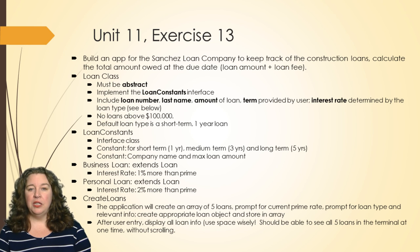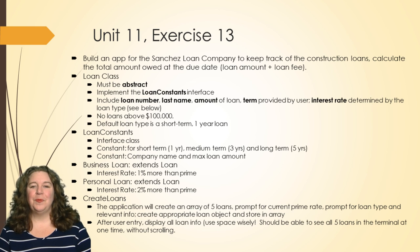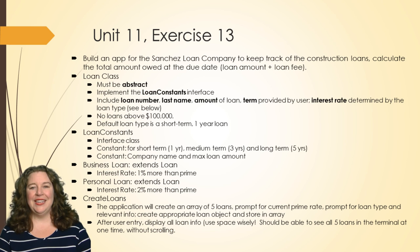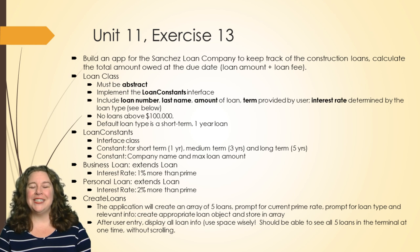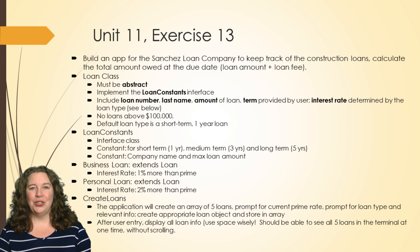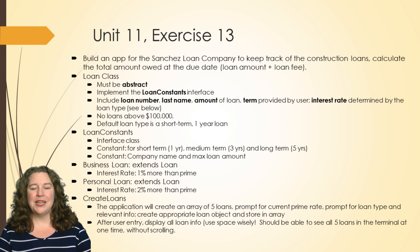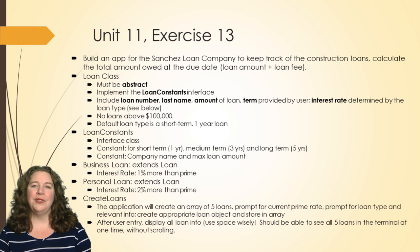Based on the information entered, you're going to determine the appropriate loan object and store it in an array. After the user has entered everything, display all of the loan information. I'm actually going to grade you on the display — use your space wisely. In a terminal there are only about 10 to 15 lines total, including prompts. I want to be able to see all your loan info on one screen without having to scroll.